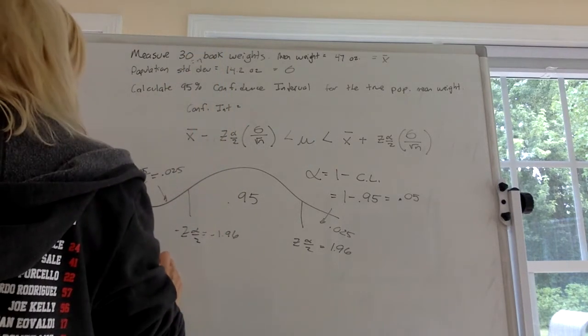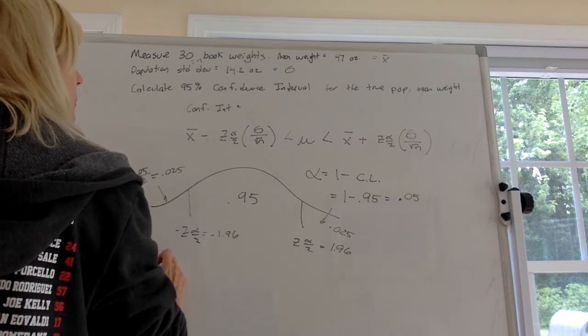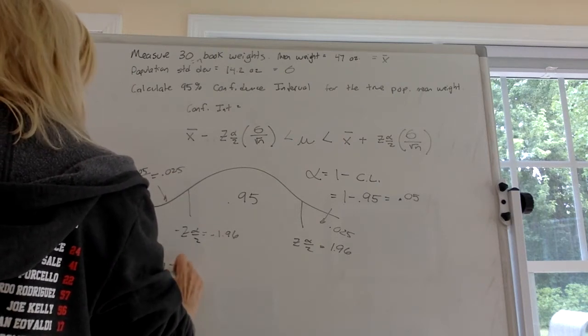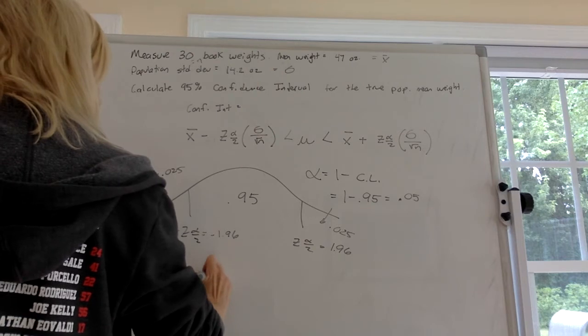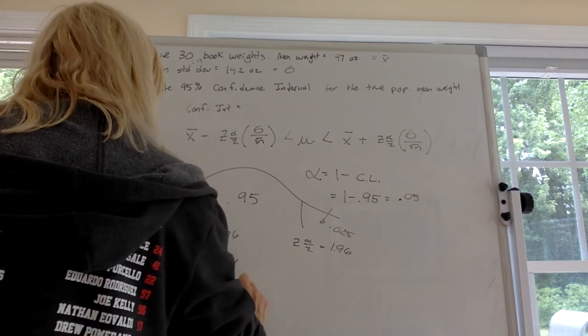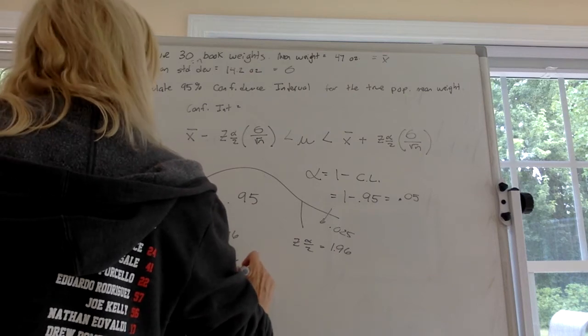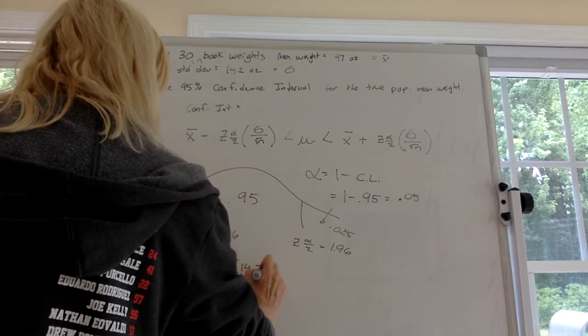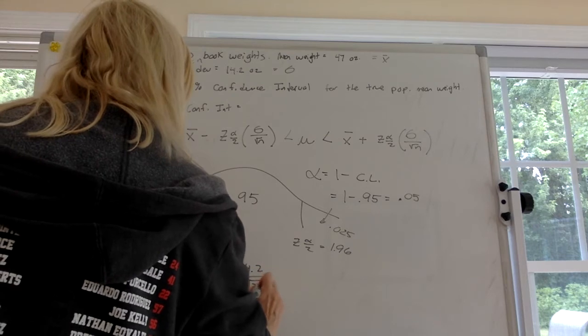So let's see. So x bar which is 47 minus z alpha over 2. You use the positive version of it times sigma which is 14.2 over the square root of 30.